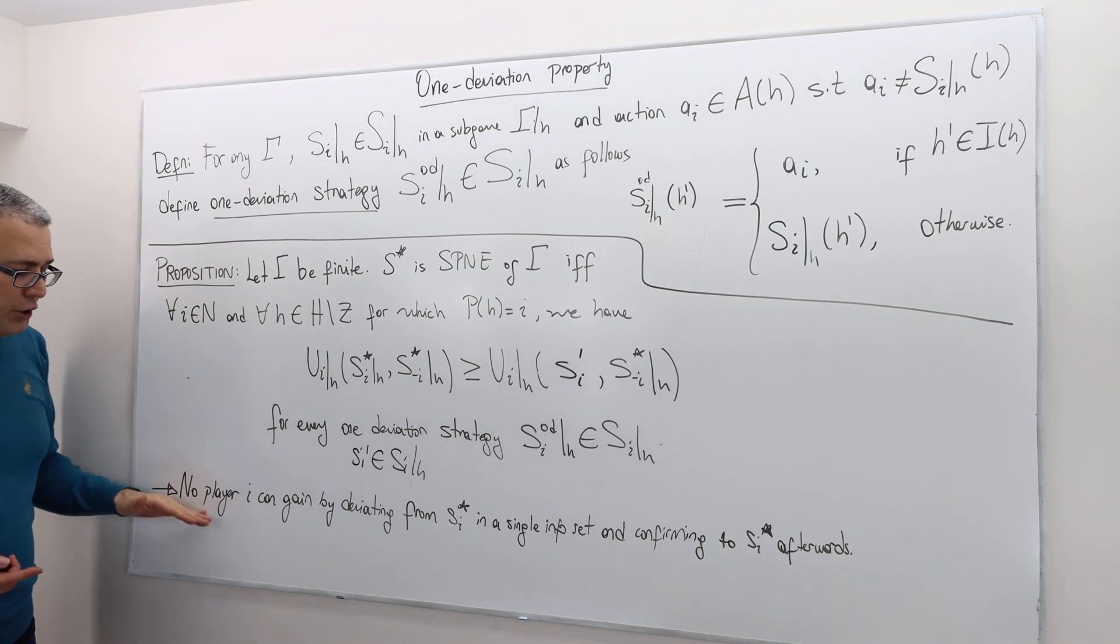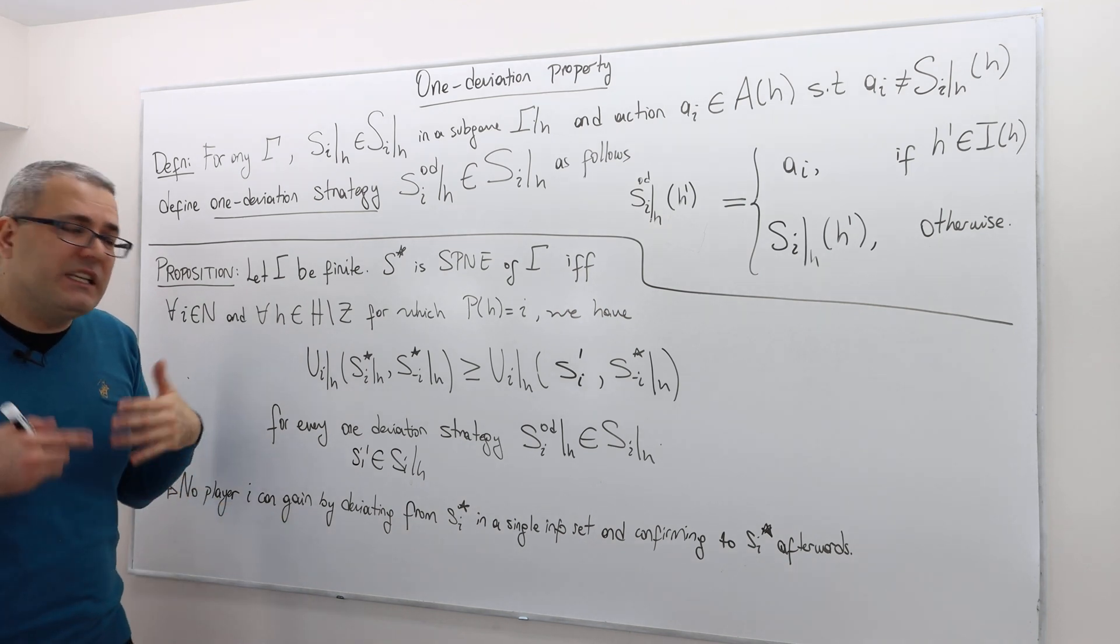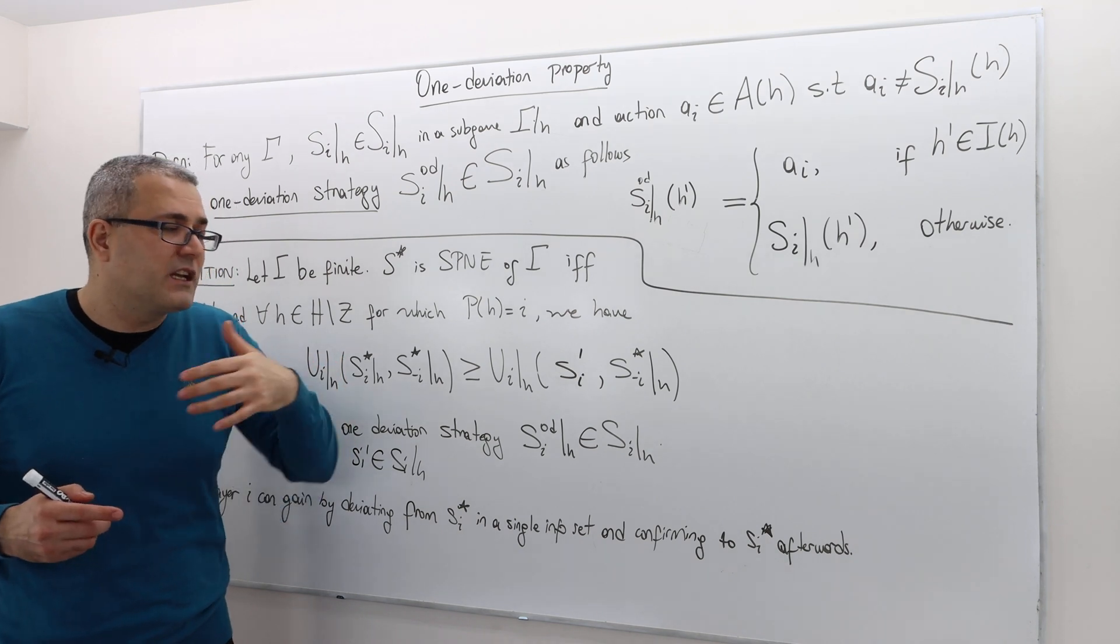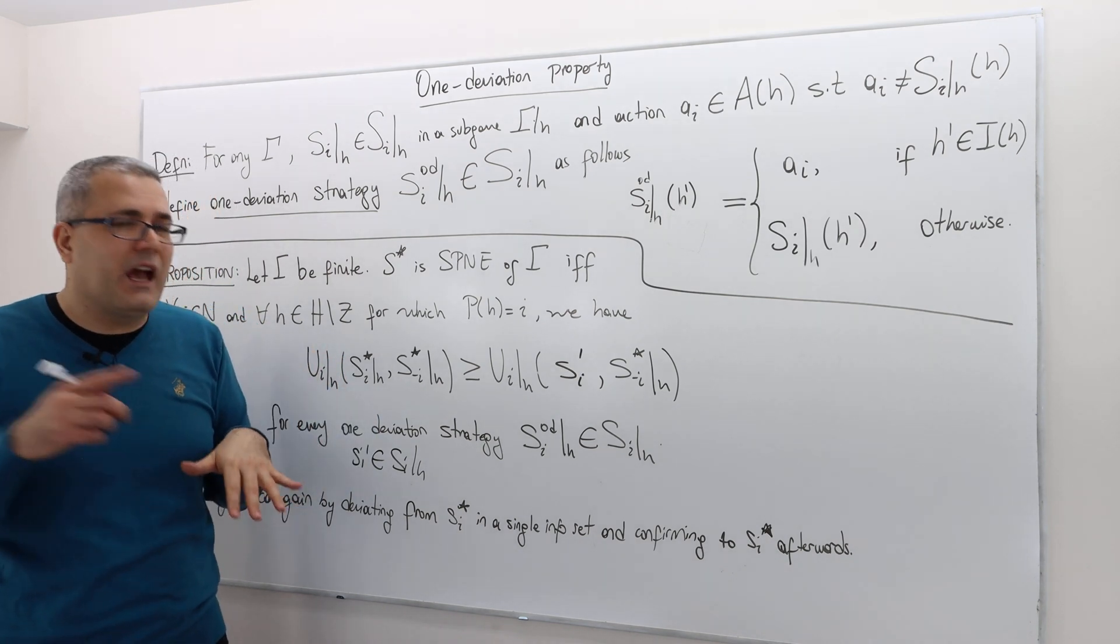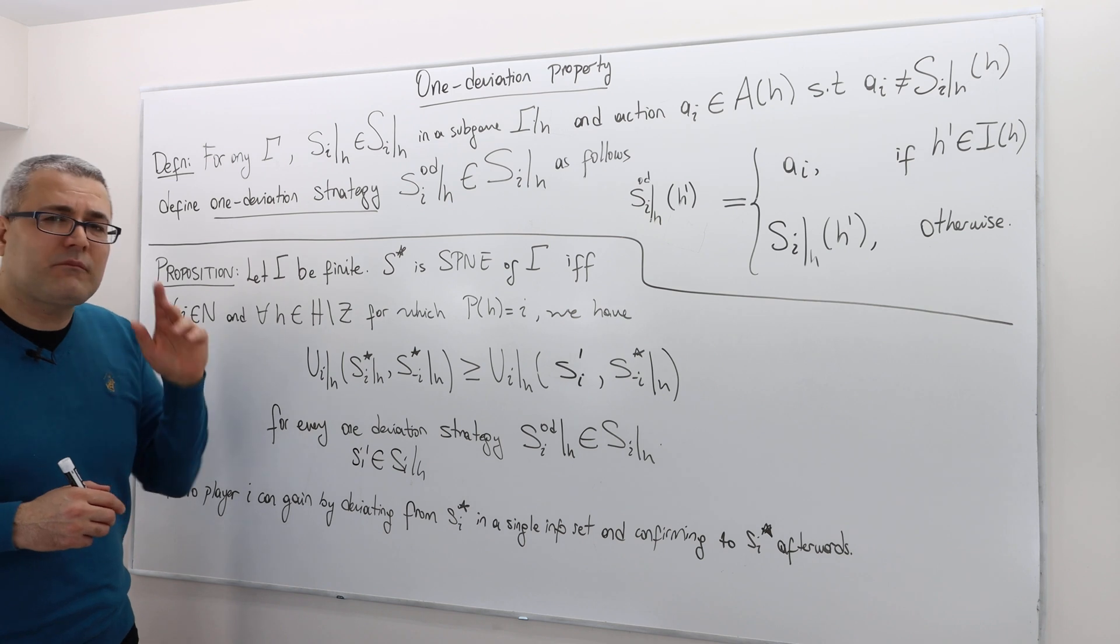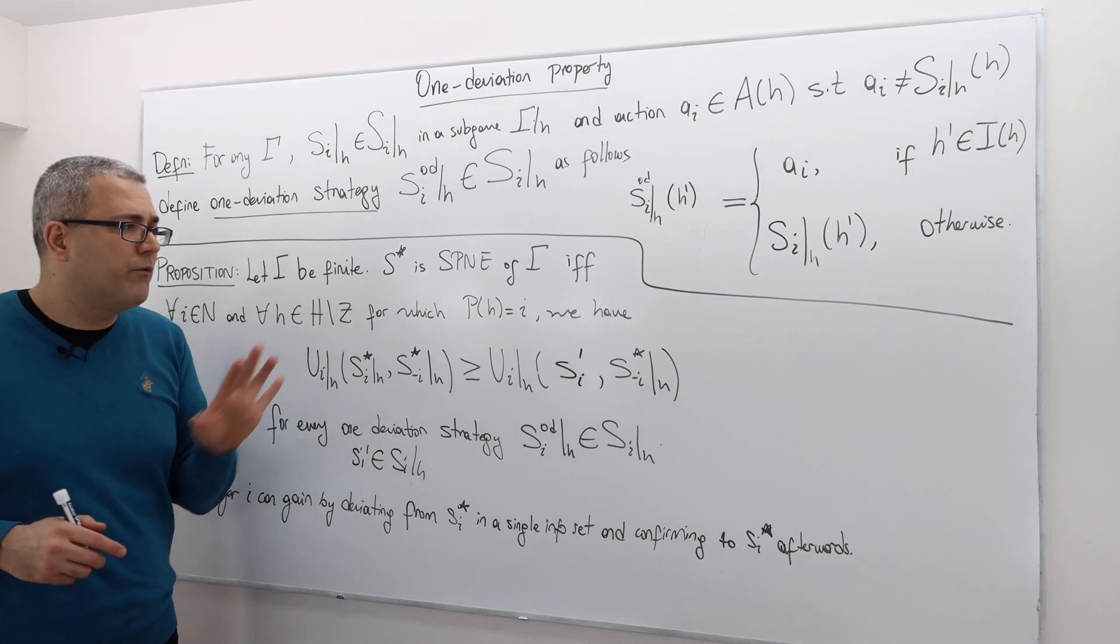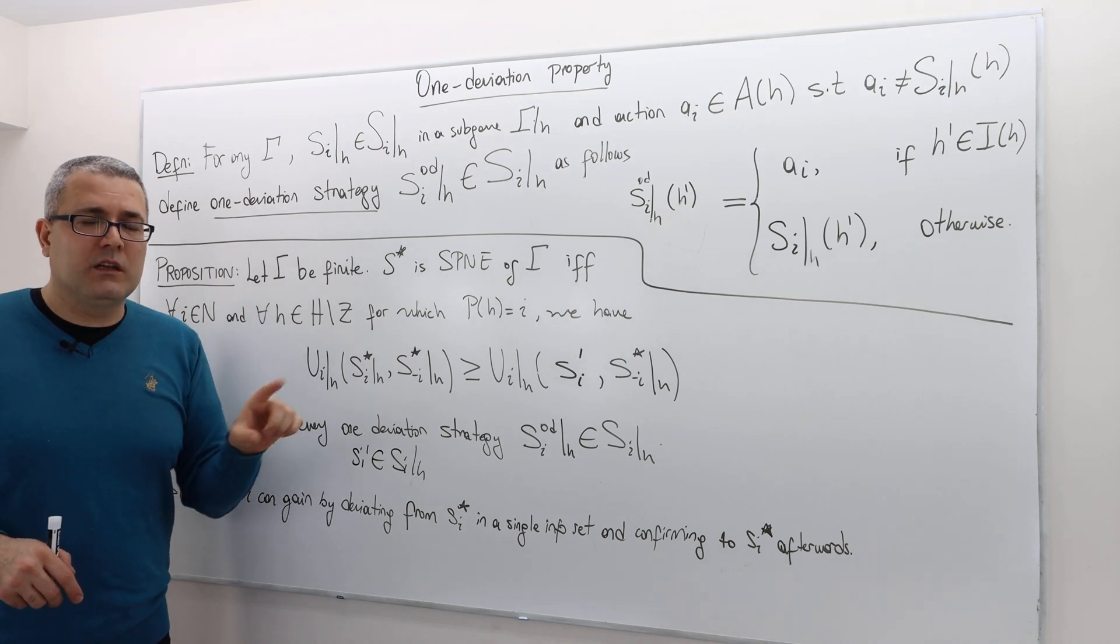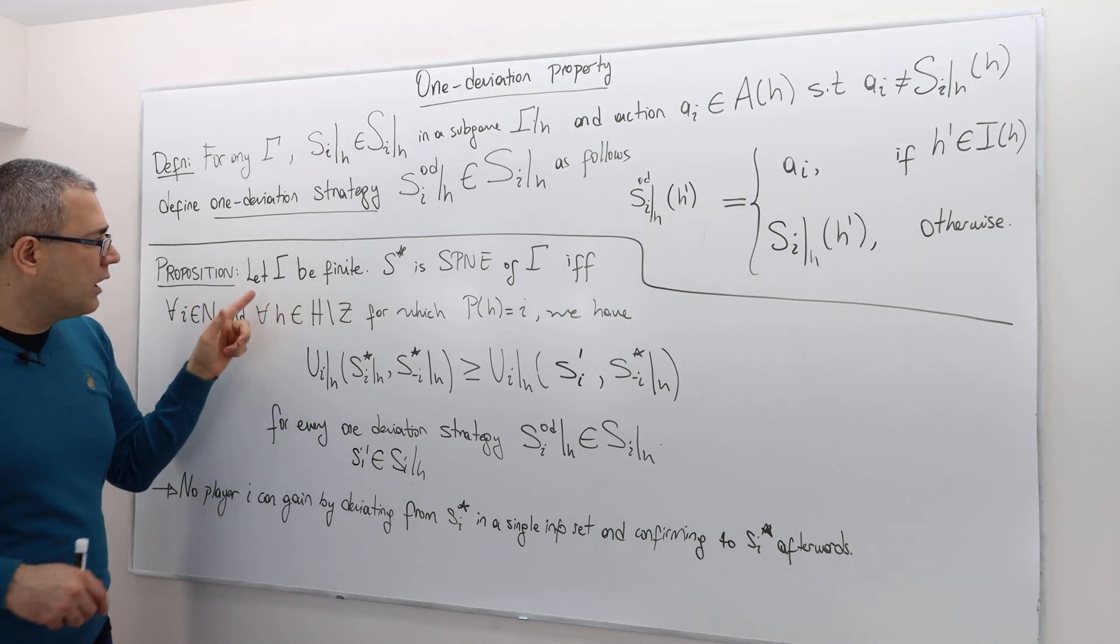this proposition says no player I can gain by deviating from S I star in a single information set and conforming to S I star afterwards. Again, I'm going to give an example and hopefully all those concepts will be clearer,